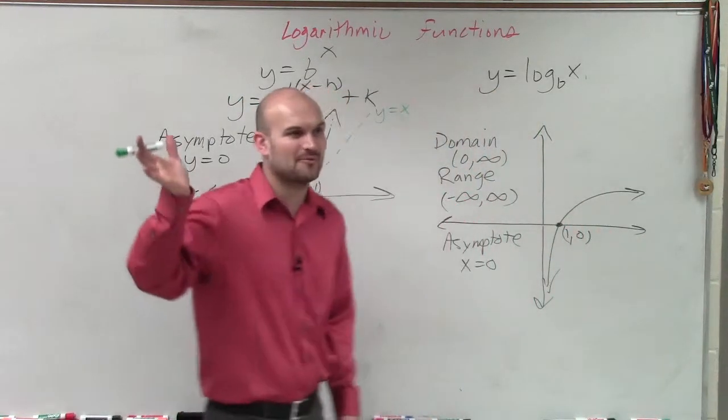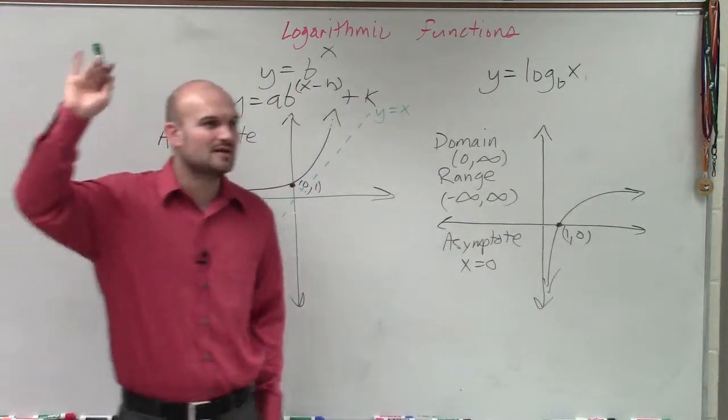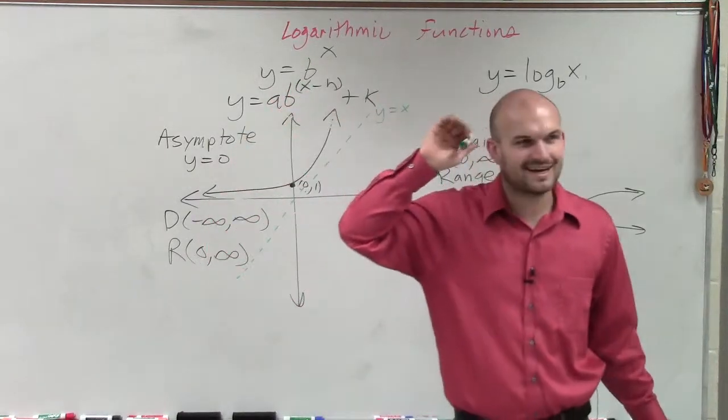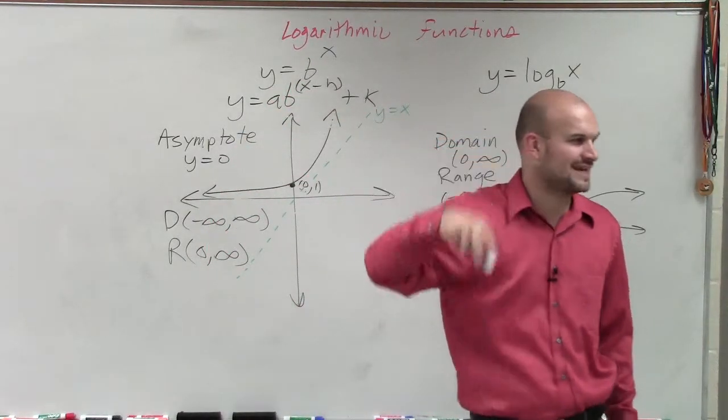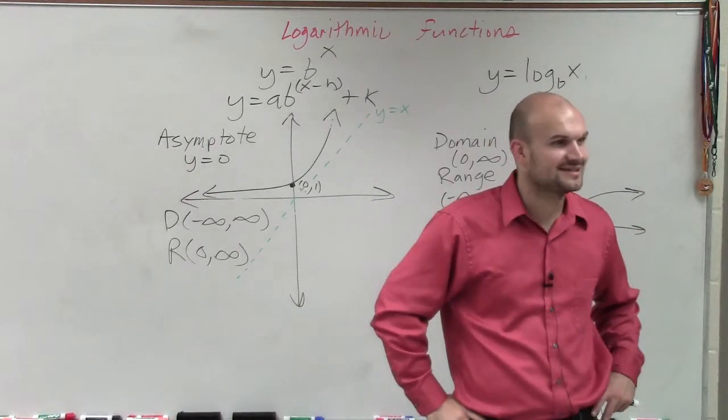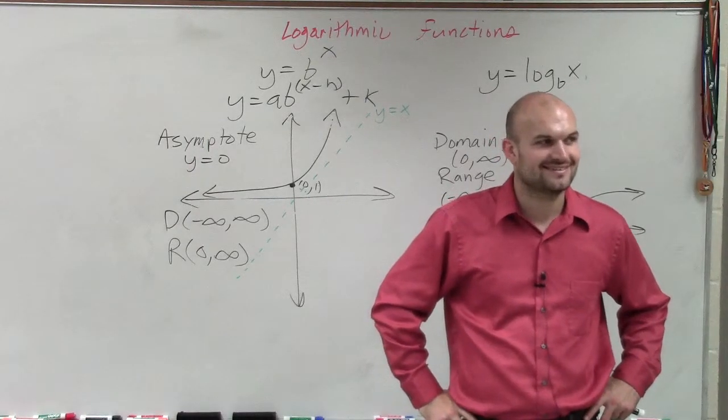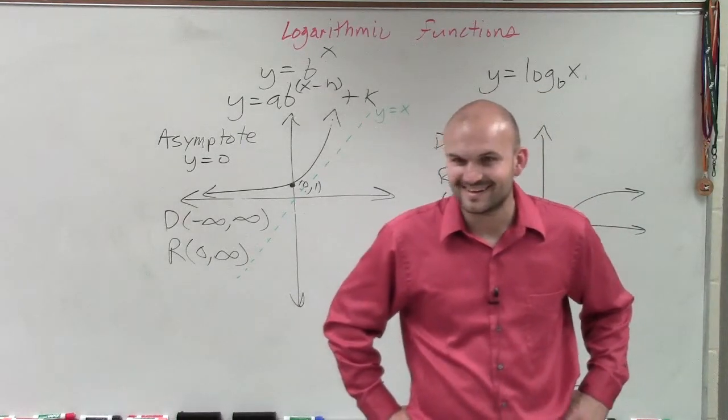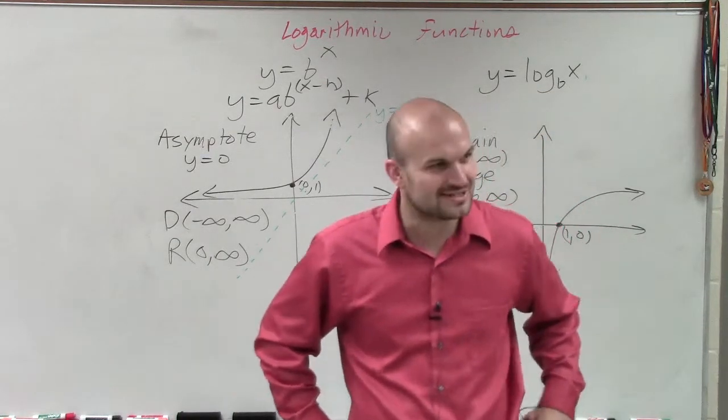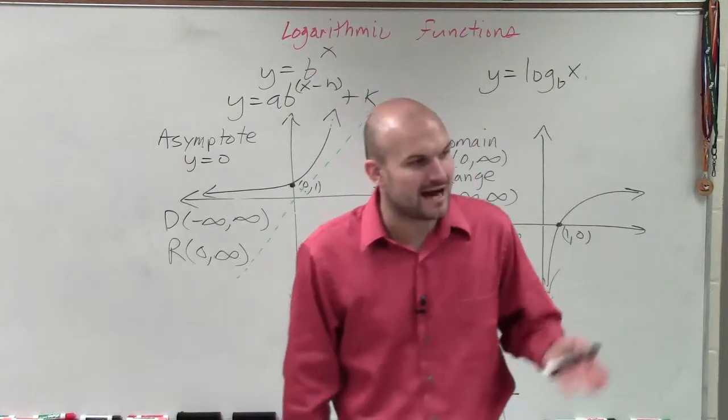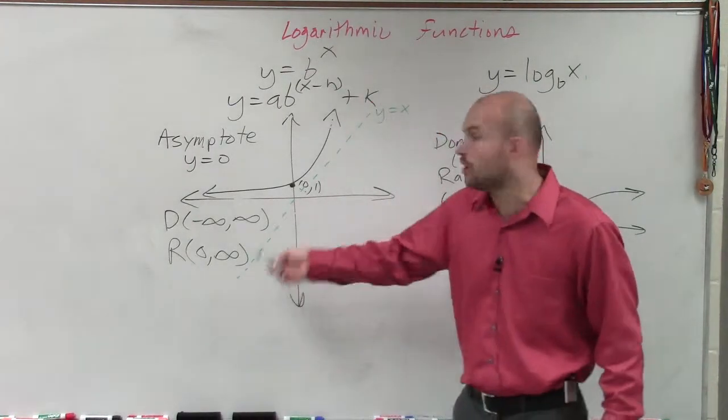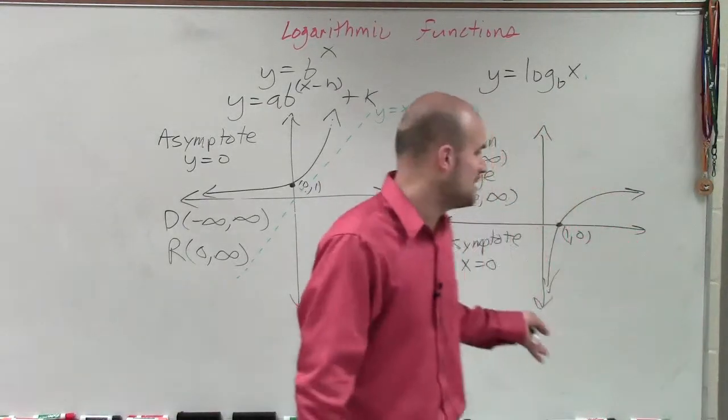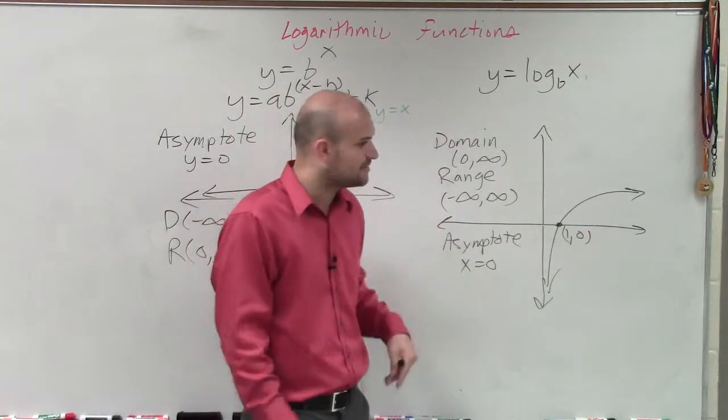Does anybody know what we call when we have two graphs that are reflected over the xy? Yeah. It starts with n, ends with ss, maybe has a little ver in the middle. Inverses. The inverse graph and its inverse are a reflection over the y equals x line. So that's how I came up with this line, by finding the inverse.